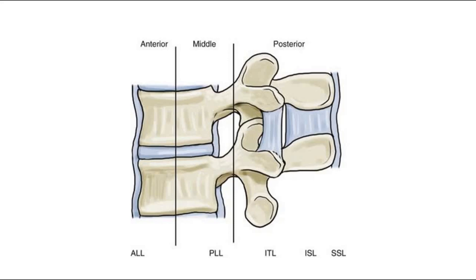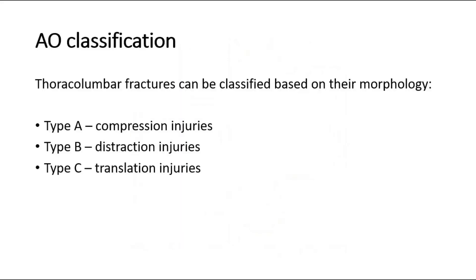Thoracolumbar fractures can be classified based on their morphology according to the AO classification. Type A: compression injuries. Type B: distraction injuries. And Type C: translation injuries.